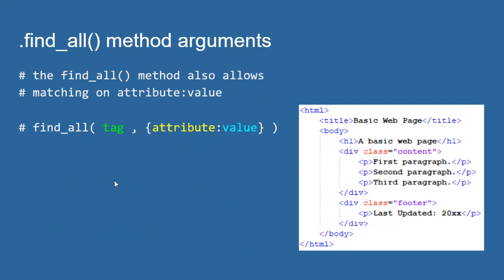The find_all method also allows us to match on key-value pairs. So if I were to say find_all divs where the class attribute equals 'content', this would return a list containing one tag — that matching div tag. So find_all also lets us search on key-value pairs.